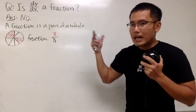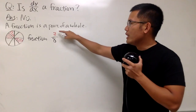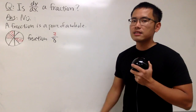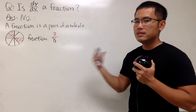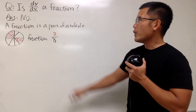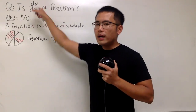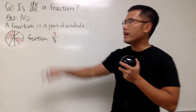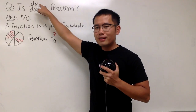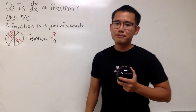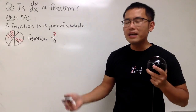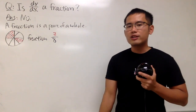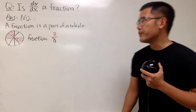Even though this is how a fraction looks, remember we have three slices out of a total of eight slices — that's what makes it a fraction. Now, if you look at dy/dx, it does look like a fraction as well, but can we say we are taking dy part out of dx? It doesn't make sense, so this looks like a fraction, it works like a fraction, but technically it's not a fraction.